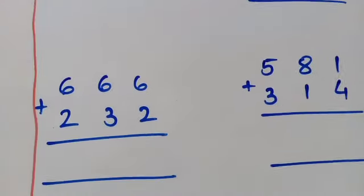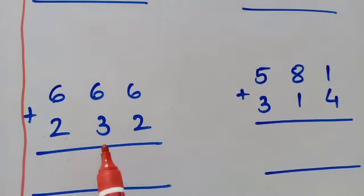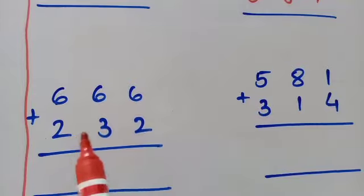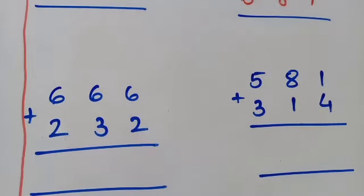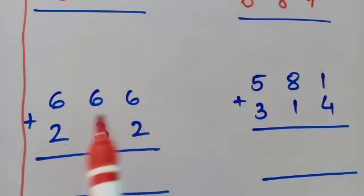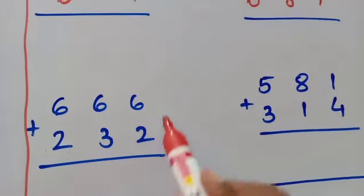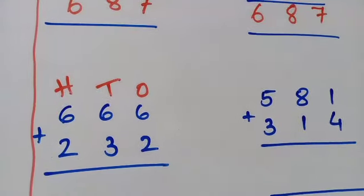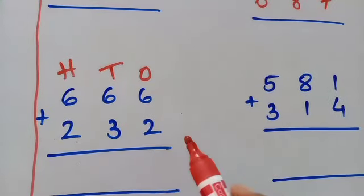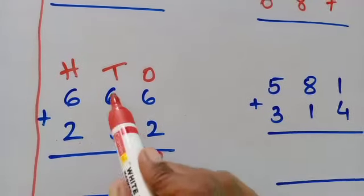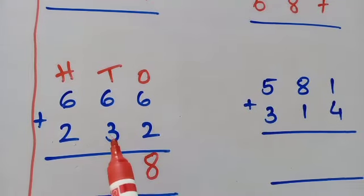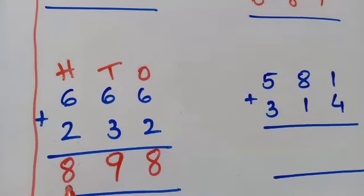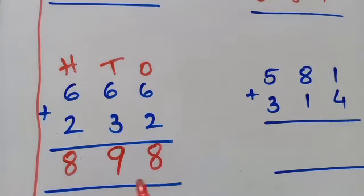The next example is 666 plus 232. While you are writing you have to read the numbers, then write the place value, then start to add. So ones place, tens place, and hundreds place — H. Let's start. 6 plus 2 — 6 after 7, 8. Write 8. Again 6 plus 3 — 6 after 7, 8, 9. Write 9. And again 6 plus 2 is 8. So 898 is the total answer.